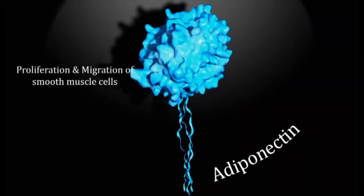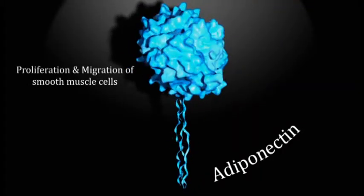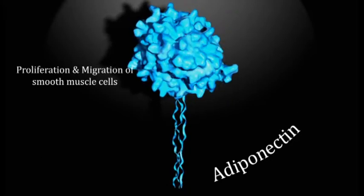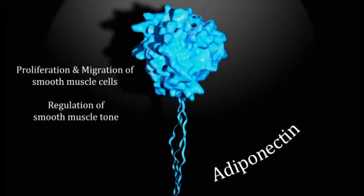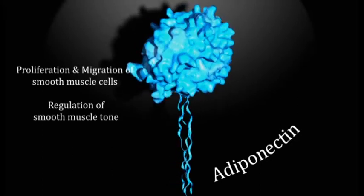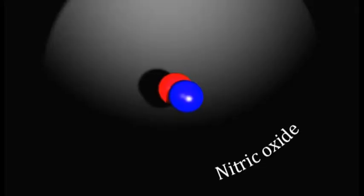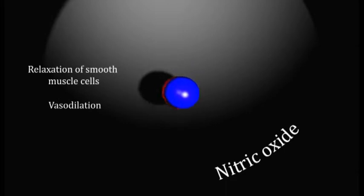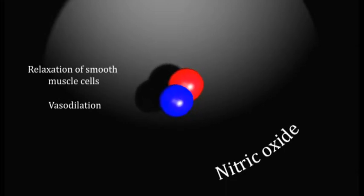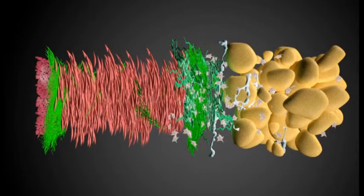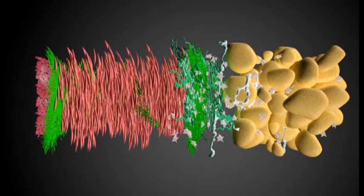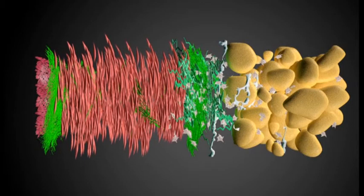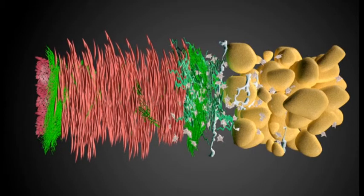Adiponectin, the first adipokine, has complex actions which include control of proliferation and migration of smooth muscle cells, along with modulation of smooth muscle tone. The second adipokine, nitric oxide, causes relaxation of smooth muscle cells, vasodilation, and therefore increased blood flow. Both of these adipokines contribute to normal vascular structure and facilitate blood flow, thus supporting the notion that perivascular adipose tissue should be considered an essential part of the vascular wall.